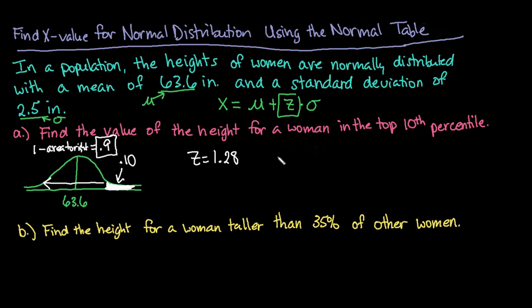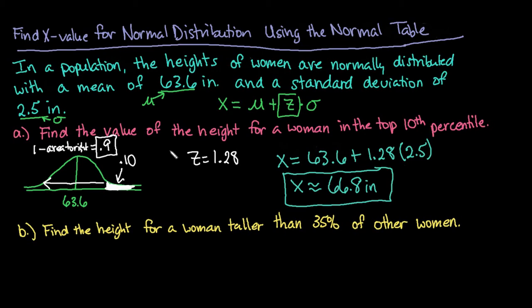So now all you would have to do is plug this into your calculator and so you would take 63.6 plus 1.28 and then multiply that by 2.5. So I already plugged this into my calculator and I ended up with x is approximately 66.8 inches. So this would end up being my random variable x to start the height of women in the top 10th percentile. So anyone that is 66.8 inches or taller would be in the top 10th percentile.